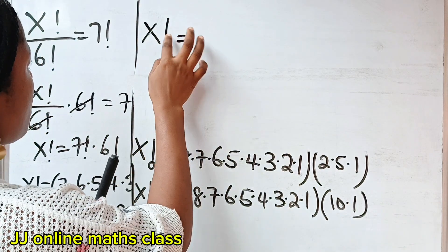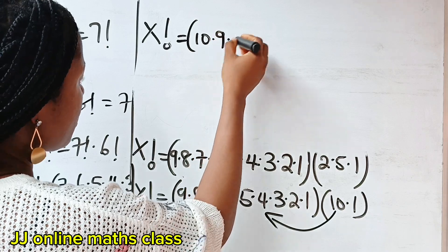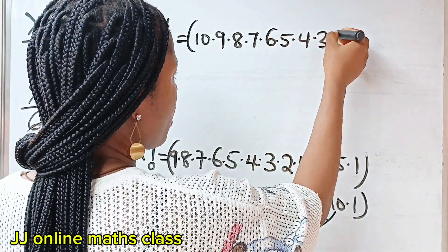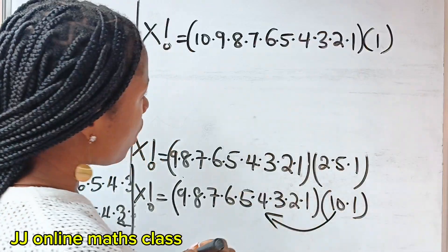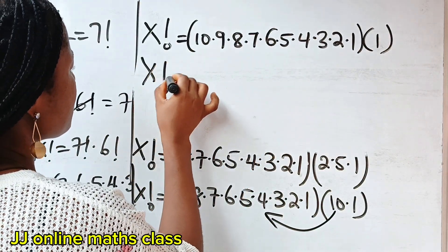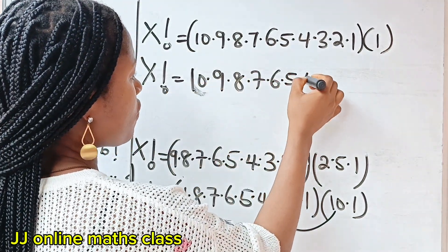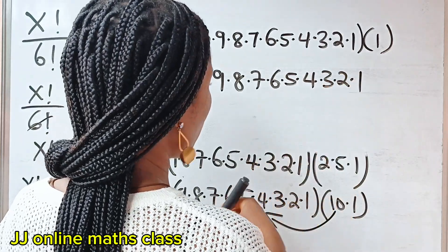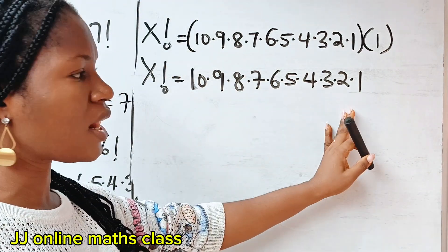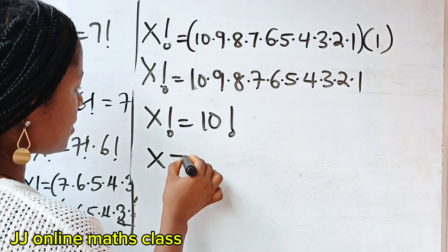X factorial is equal to — let's take this to this side. If we do that, we have 10 multiplied by 9 multiplied by 8 multiplied by 7 multiplied by 6 multiplied by 5 multiplied by 4 multiplied by 3 multiplied by 2 multiplied by 1. Now, remember that anything multiplied by 1 still gives you the same thing. So this is definitely 10 factorial — which means that x factorial is equal to 10 factorial, and this simply means that x is equal to 10.